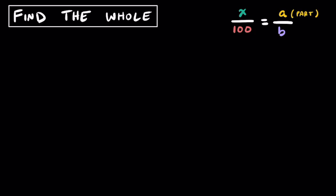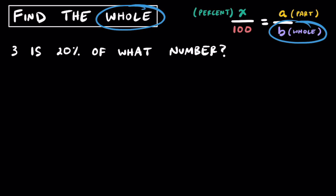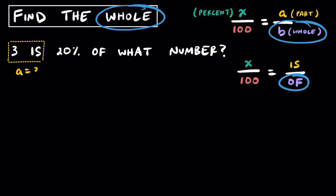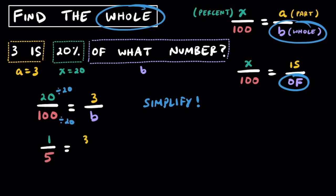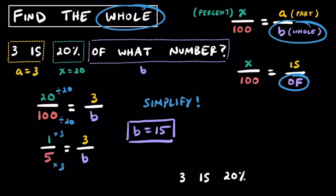Now that we've practiced finding the percent and the part, let's try finding the whole. The problem is: 3 is 20% of what number? Grouping '3 is' means a equals 3, 20% means x equals 20, and 'of what number' is our whole, b. Our proportion is 20 over 100 equals 3 over b. Simplifying the left ratio by their GCF gives 1 over 5 equals 3 over b. Since 1 times 3 equals 3 on top, then 5 times 3 equals b, so b equals 15. Therefore, 3 is 20% of 15.